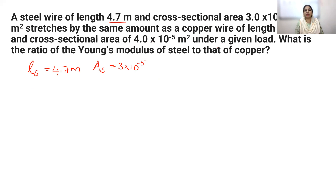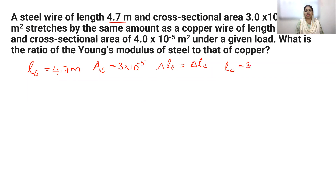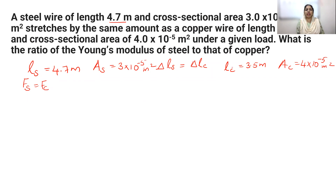It stretches by the same amount as that of a copper wire, which means delta L of steel equals delta L of copper — elongation in steel and elongation in copper is given as equal. Copper wire length is given as 3.5 meter and area of cross-section of copper is given as 4 into 10 raised to minus 5 meter square. Under a given load, force applied on the steel rod is equal to force applied on the copper rod. What is the ratio of Young's modulus of steel to that of copper?